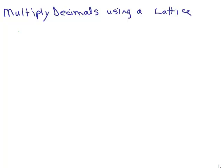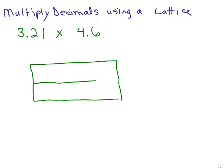So here's an example. Let's take 3.21 times 4.6. So we start off the same as if it was just 321 times 46. So we can go ahead and put 3.21 times 46.